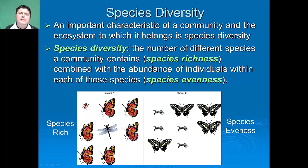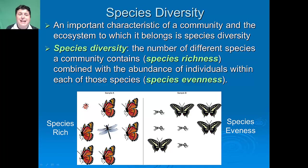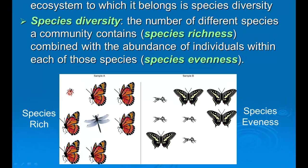An important characteristic of a community and the ecosystem to which it belongs is species diversity. Species diversity is the number of different species a community contains combined with the abundance of individuals within each of those species. The number of different species in a community is referred to as its species richness, while the abundance of individuals within each species is referred to as its evenness.